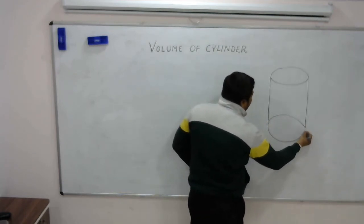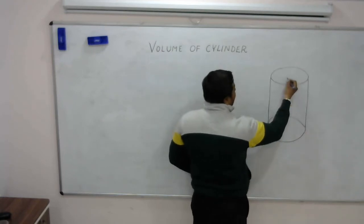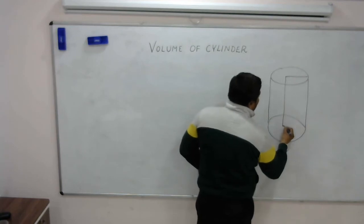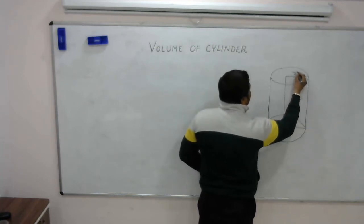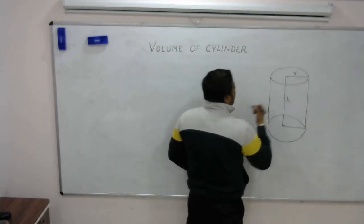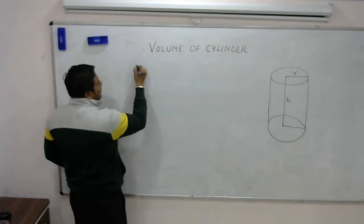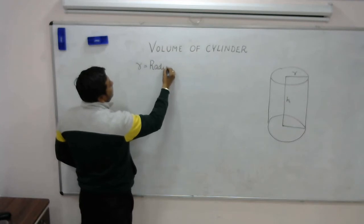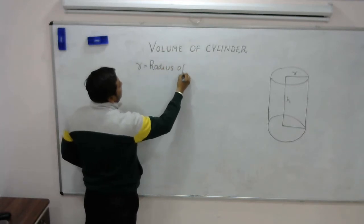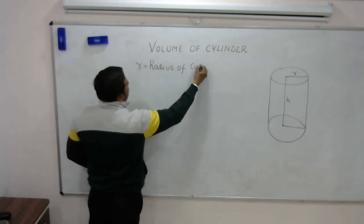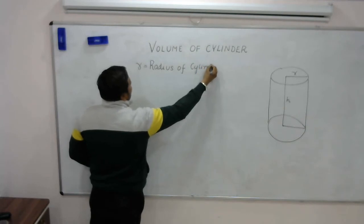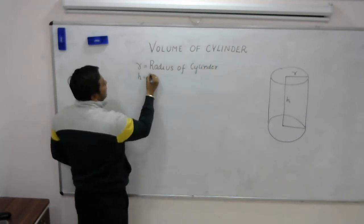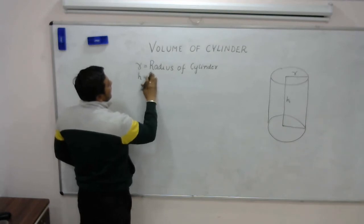As we talk about the right circular cylinder, let R be the radius and H be the height of the cylinder.